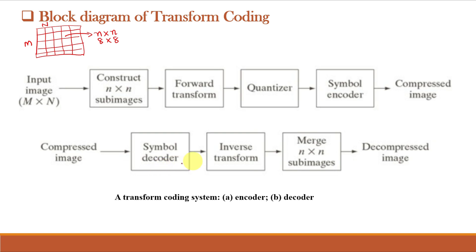The decoder implements the inverse sequence of steps, with the exception of the quantization function. The encoder performs four relatively straightforward operations: sub-image decomposition, transformation (usually DCT), quantization, and coding. The goal of transformation is to decorrelate the pixels of each sub-image or to pack as much information as possible into the smallest number of transform coefficients. The quantization stage selectively eliminates or more coarsely quantizes the coefficients carrying the least information. The encoding process terminates by coding the quantized coefficients, normally using a variable-length code such as Huffman coding. Any or all steps can be adaptive to local image content (adaptive transform coding) or fixed for all sub-images (non-adaptive transform coding).